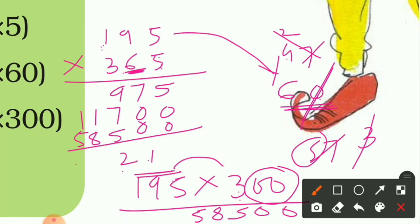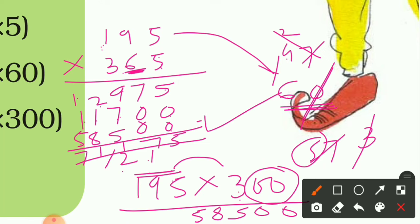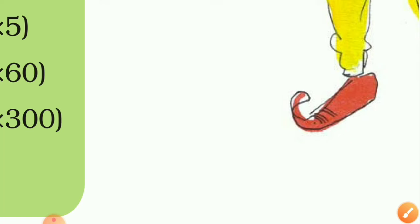Now find the sum of all three products. 5 + 0 + 0 = 5; 7 + 0 + 0 = 7; 9 + 7 + 5 = 21, write 1 carry 2; 8 + 1 + 2 = 11, write 1 carry 1; 5 + 1 = 6, carry gives 7. The minister's salary for one year is 71,175 rupees.